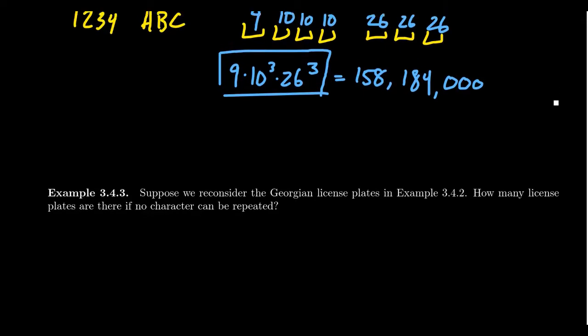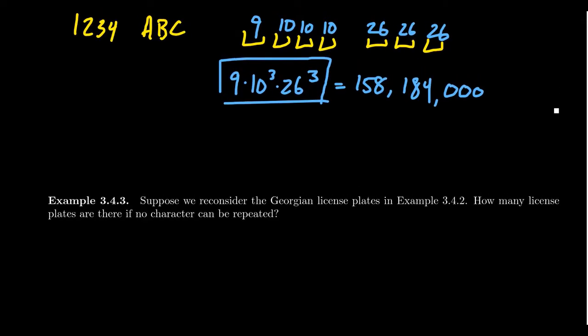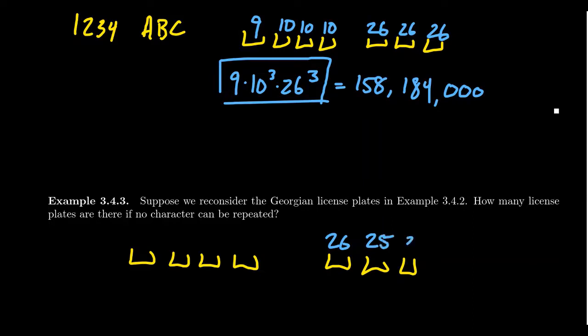Suppose we're looking at Georgian license plates, but what if repeated letters are not allowed? If repetition is not allowed this time, how does that change the problem? It doesn't really change much, but instead of counting strings, we're now trying to count permutations. The Roman letters are going to be easy. For the first one, we have 26 letters allowed, but without repetition, you get 25 and 24. We've seen examples like this before.